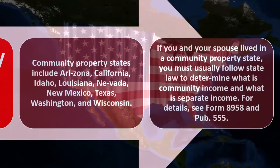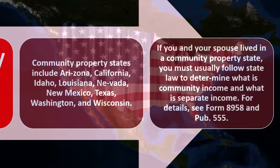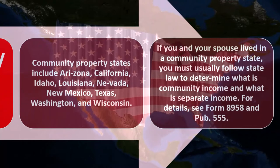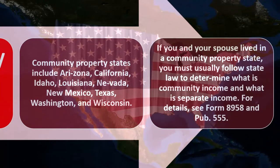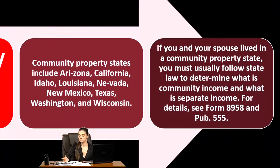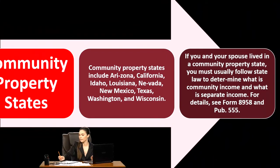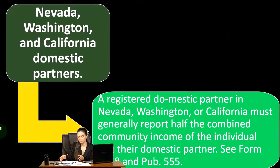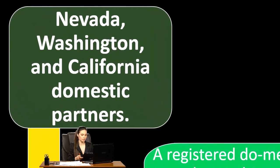If you and your spouse lived in a community property state, you must usually follow state law to determine what is community income and what is separate income. For details, you can see Form 8958 and Publication 555. This also applies to Nevada, Washington, and California domestic partners.